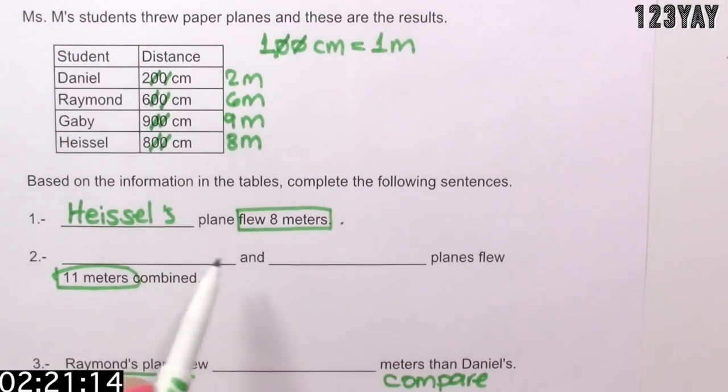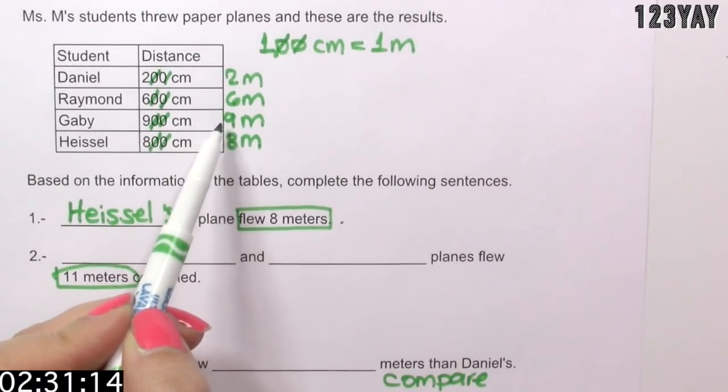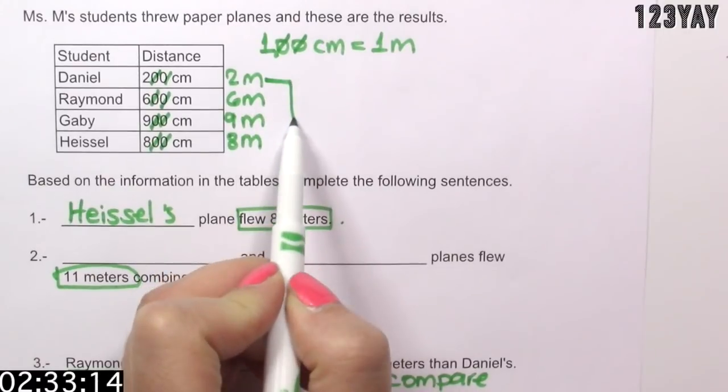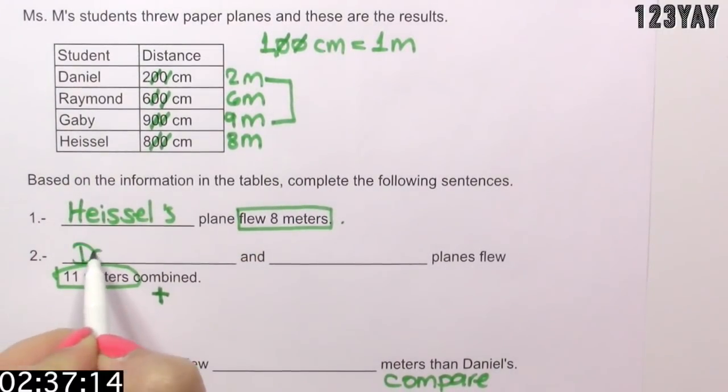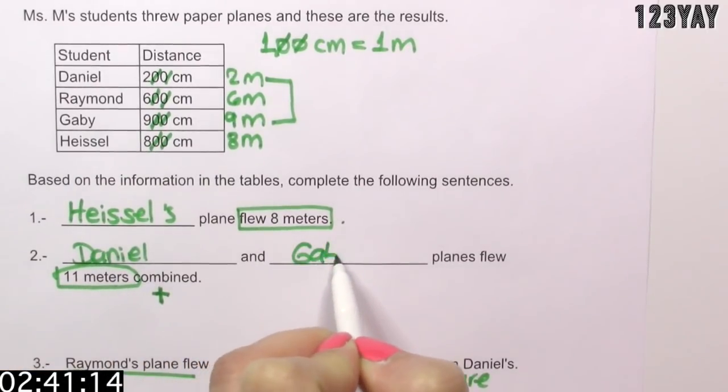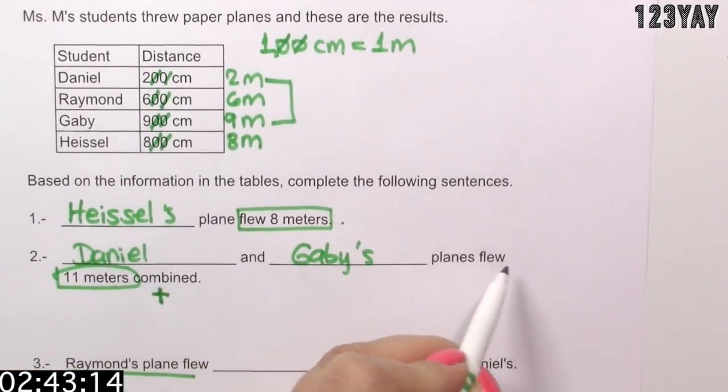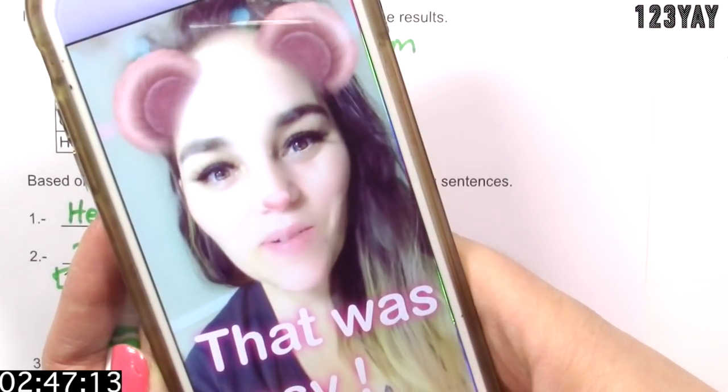Number 2. We have to find 2 planes that combined, which means added, adds up to 11. So 2 plus 6 is 8. 2 plus 9 is 11. So Daniel and Gabby's planes flew 11 meters combined. Wow! That was easy.